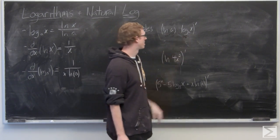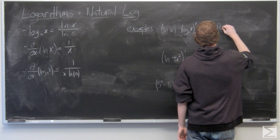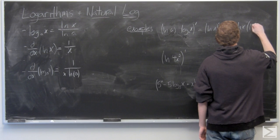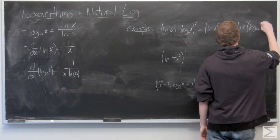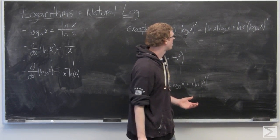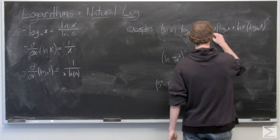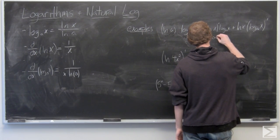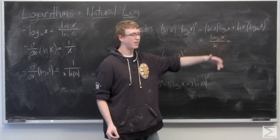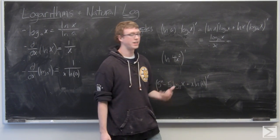And we can simply multiply this all out, which is going to be 1 over x times log a of x, plus ln x all over x ln a.